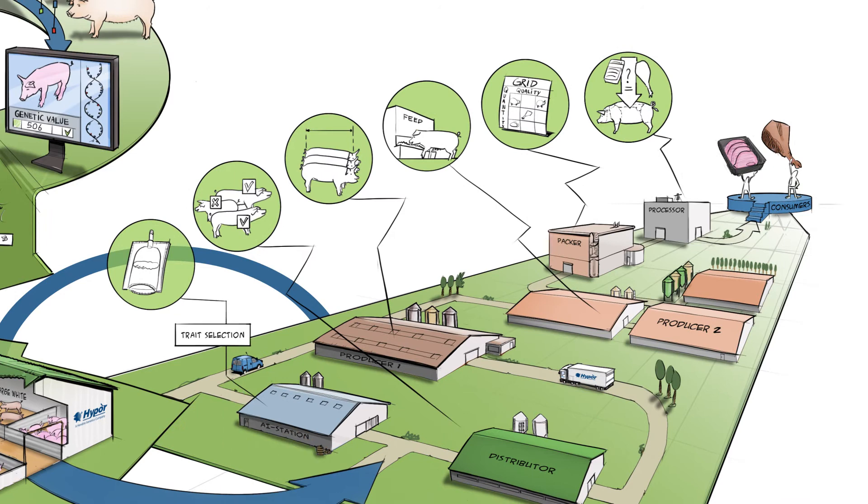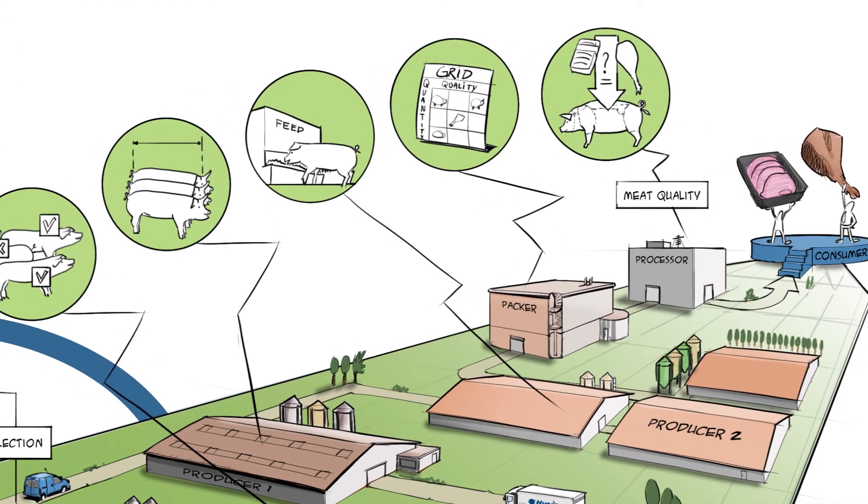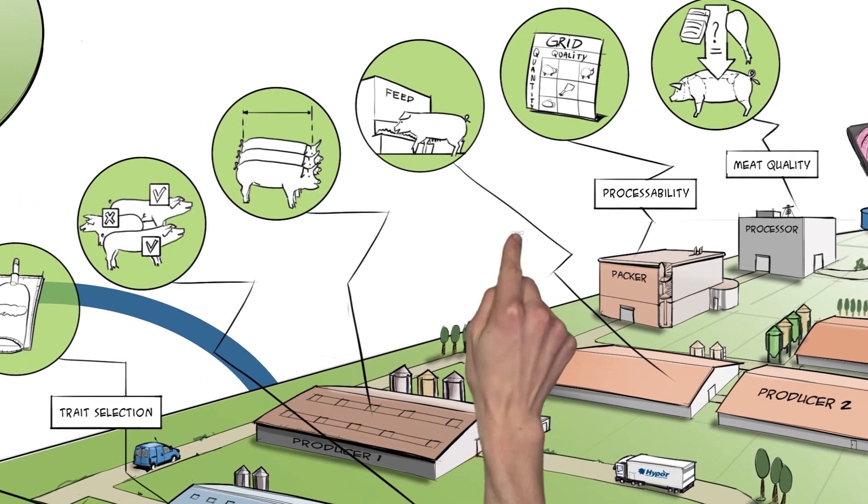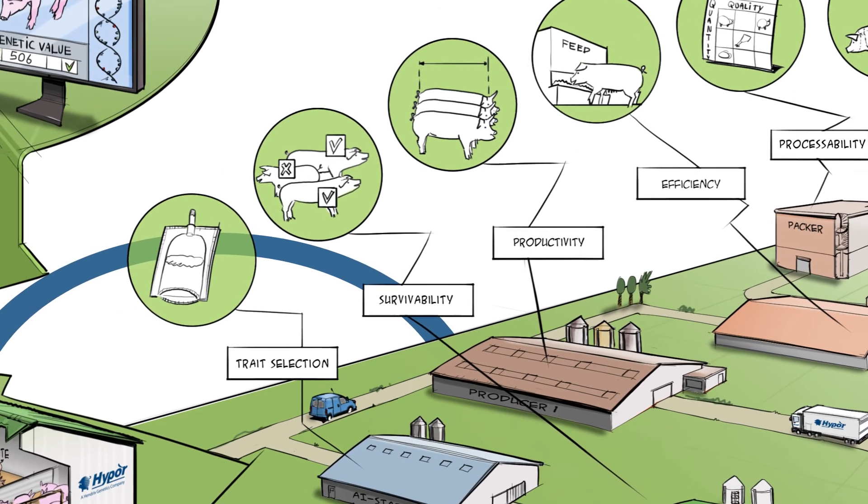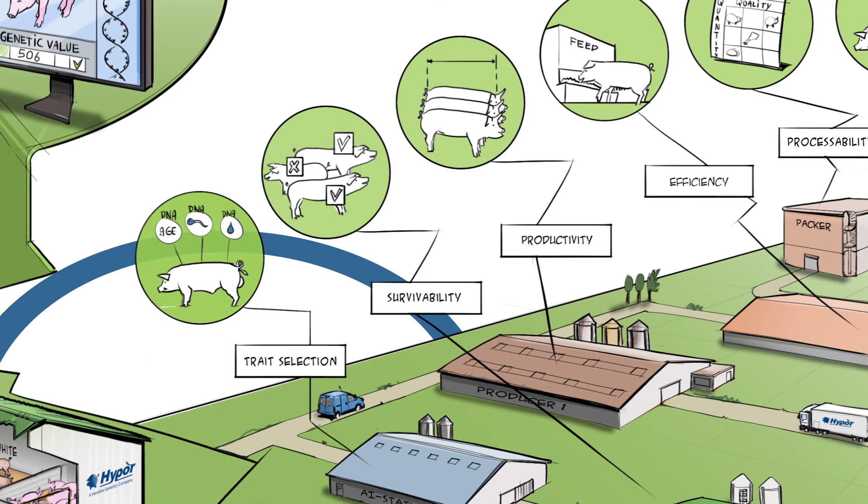New traits such as meat quality, processability, efficiency, productivity, and survivability are more easily transferred with genomic selection.